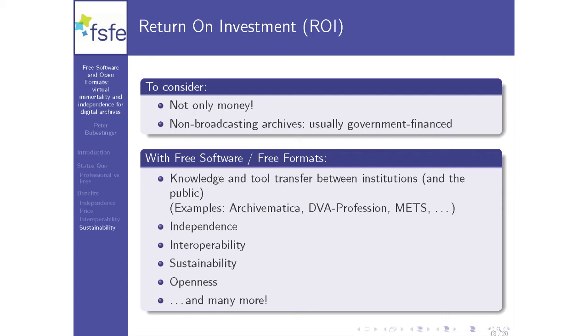You've got interoperable systems, and if they're not as compatible as you want, you can ask someone to add that feature. You've got sustainability because you've got the source code and the right to keep it alive and adapt it to your needs. This is actually openness in its purest form — I've heard that word a lot here — and this is how to really make it in the real world. There are many more benefits, but too many to list. If you have any questions, we're probably not having them right now. Thank you.